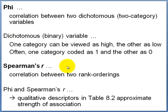A second correlational measure is Spearman's r, defined as the correlation between two rank orderings. The descriptors in table 8.2 will work reasonably well for both phi and Spearman's r. That wraps up our discussion of correlation and regression. The next topic will be relationship where one variable is categorical and the second is numeric.